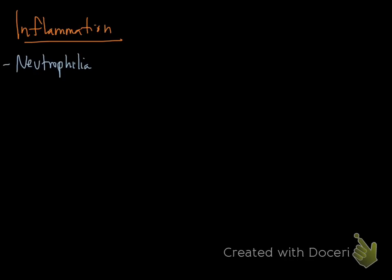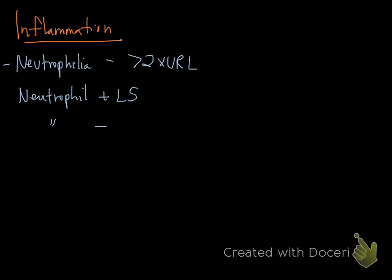We identify inflammation in the blood by a few things. A neutrophilia greater than two times the upper reference limit — and it's not an excited cat — equals inflammation. Any neutrophil count plus a left shift equals inflammation. And any neutrophil count plus something called toxic change also equals inflammation.